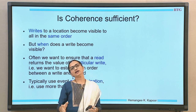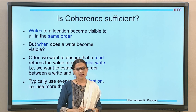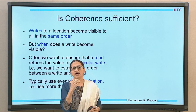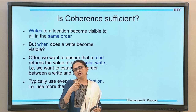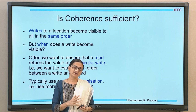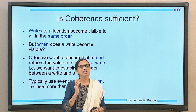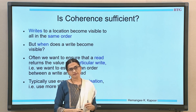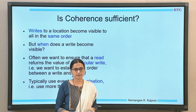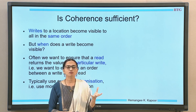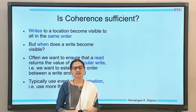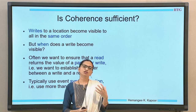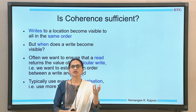However, coherence never told us how early we are going to get this value. When I write a value of x equal to 2, is it at the next millisecond or nanosecond that it becomes effective, or will it be effective after several hours? We do not know when the value will be available. Coherence only said the value will eventually be available — it never said how early or when. So when this write becomes visible is not mentioned by coherence, and hence coherence is not sufficient.